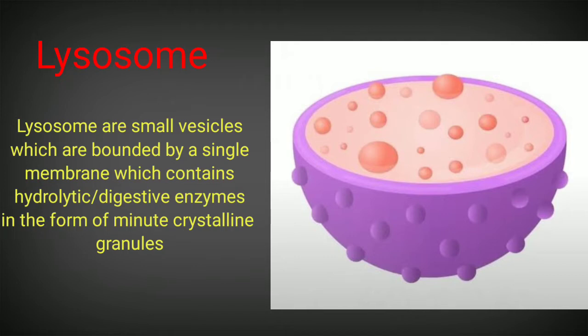Lysosomes may vary in their size - they can be from 0.2 to 0.3 micrometers, and in case of some cells such as WBCs, they can also go up to 5 micrometers in size.